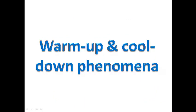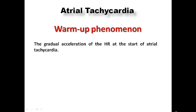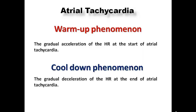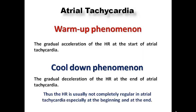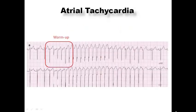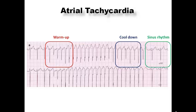Our last ECG feature today is the warm-up and cool-down phenomena. In automatic atrial tachycardia, there is gradual acceleration of heart rate at its start and gradual deceleration when it terminates spontaneously. This is very common with automatic atrial tachycardia — you will not see this sign with re-entrant or triggered atrial tachycardia. Heart rate is therefore not completely regular in the automatic type, and we can observe gradual acceleration at onset and gradual deceleration at the end before sinus rhythm is restored.